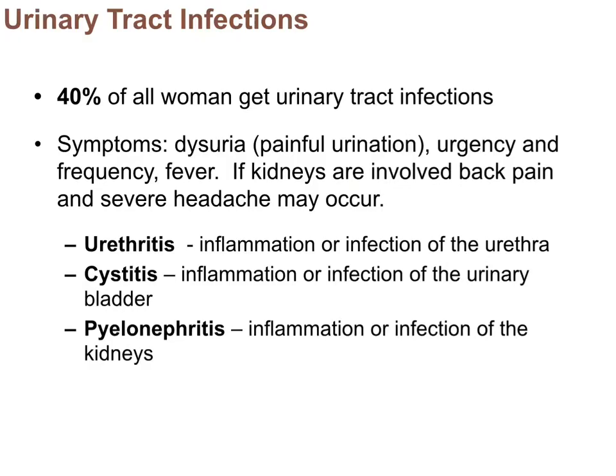40% of all women get urinary tract infections. Women have a short urethra, making infections far more common than in males who have a longer urethra with more protective mucous membrane containing defensins and lysozymes. You should know the difference between: urethritis (infection/inflammation of the urethra), cystitis (bladder infection), and pyelonephritis (kidney infection). As they progress from urethra to bladder to kidney, they become increasingly severe.